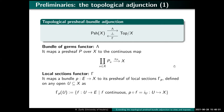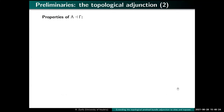In the opposite direction, the right adjoint, gamma, is called the local sections functor. It takes a bundle over X — so we have our continuous map p from E to X — and we call local sections the continuous maps from an open U inside X such that they work as a section of our map p. So they are the local sections of p at the open U. This defines a pre-sheaf.